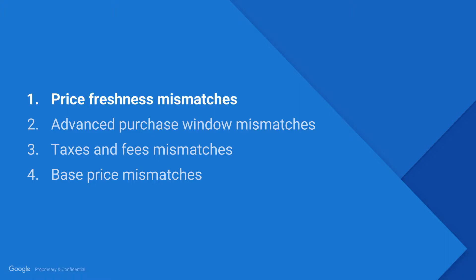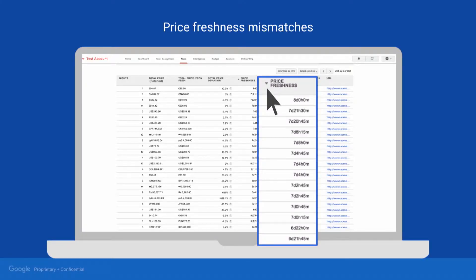Starting with price freshness mismatches. To begin, sort your data in descending order by the column heading price freshness. Look to see if you have more than ten rows with price freshness greater than one day. As you see in this example, the price accuracy suffers because they have many itineraries with prices that are over six days old. This means they are not updating their price feed frequently enough. Ideally, you should update your price feed every time a price changes or at least once per day.